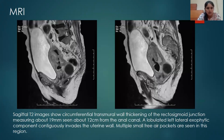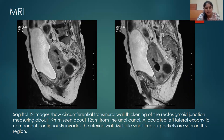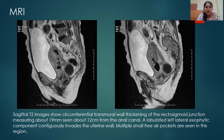In the MRI, we have sagittal T2 images which confirmed our findings, showing circumferential transmural thickening of the rectosigmoid junction. It measured about 19 mm and was seen about 12 centimetres from the anal verge. There was a lateral exophytic component towards the left side which contiguously invades the uterine wall. At the time of MRI examination there were multiple small air pockets as well.